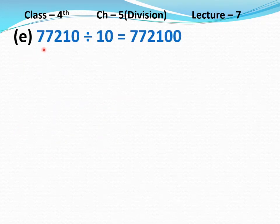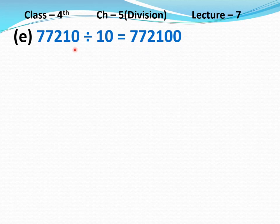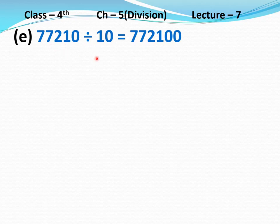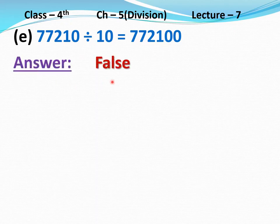Part E: 77,210 divided 10 equal to 772100. One zero in the dividend and one zero in the divisor cancel out, giving 7721 divided 1 equal to 7721. But the quotient written is 772100, which is wrong. This statement is false. Answer: False.